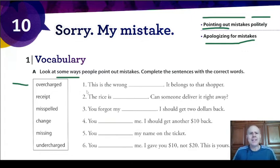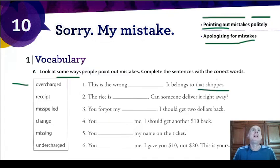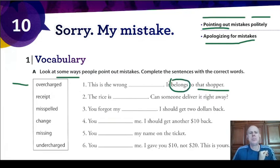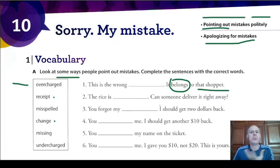We have these sentences, and the idea is for us to put the right words in the right gaps. Let's see the options. This is the wrong one — 'it belongs to that shopper.' It belongs, so it's something that pertains to that person. What could it be? Could it be the change? Because change is money. Receipt is also something. The change belongs to that shopper — I think receipt is better here.